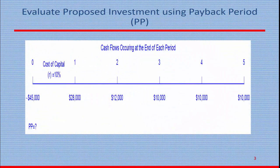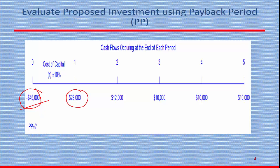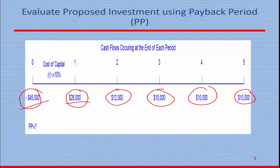Let's see an example — the same example I have been using. The initial cash flow is $45,000, meaning you invest $45,000 in the current year, and that will generate five future cash flows: $28,000 in year 1, $12,000 in year 2, $10,000 in year 3, $10,000 in year 4, and $10,000 in year 5. So what is the payback period? Without any complexity, how do you calculate it? You invested $45,000 at the beginning, and you get $28,000 back in the first year. So how much is remaining?